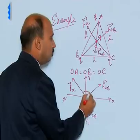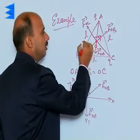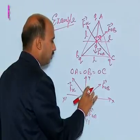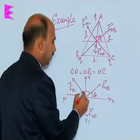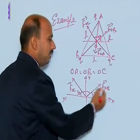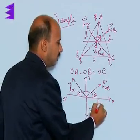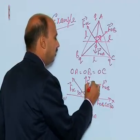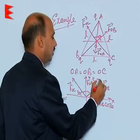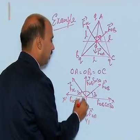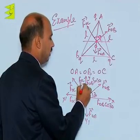This angle is 120 degree, so when we make here this angle will be coming here 30, so here this is 30 and this is 30. We can write its component FOB cos 30, FOB sin 30, FOC cos 30 and FOC sin 30. These are the components of the forces.